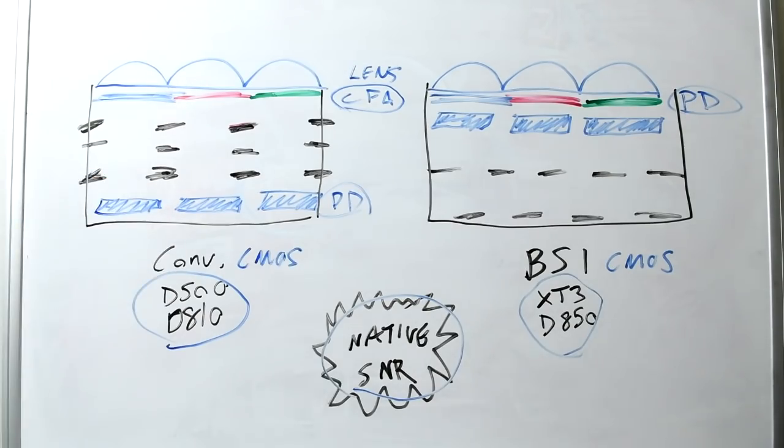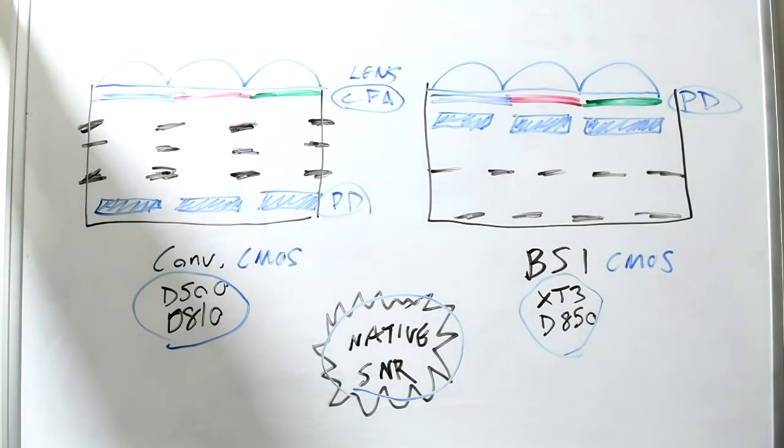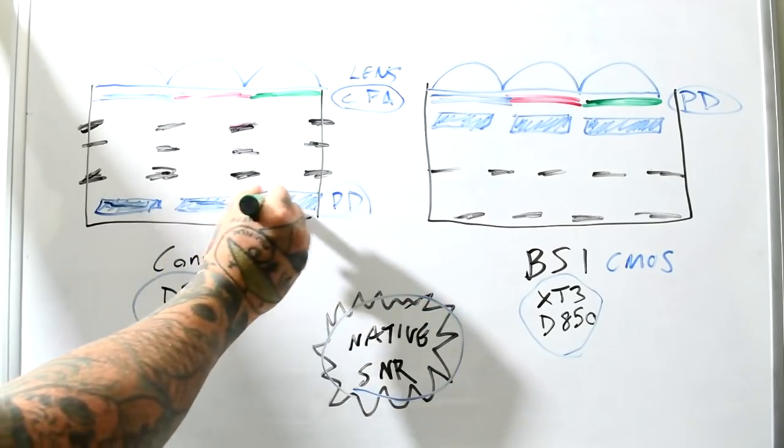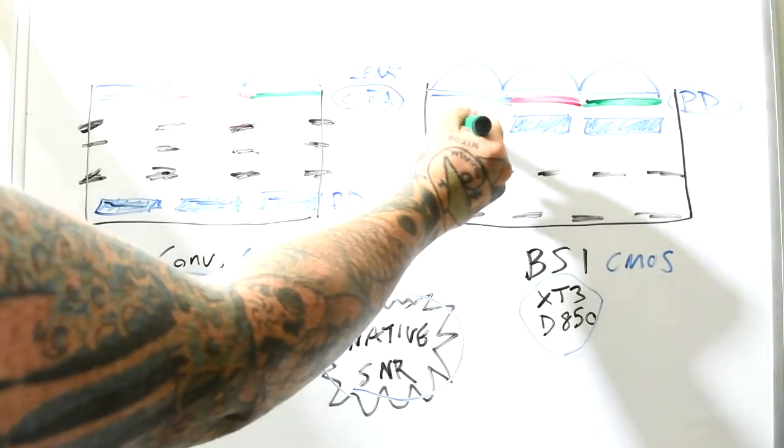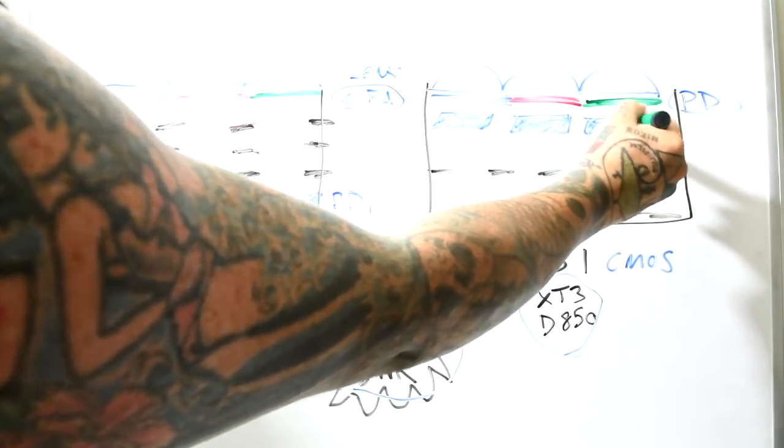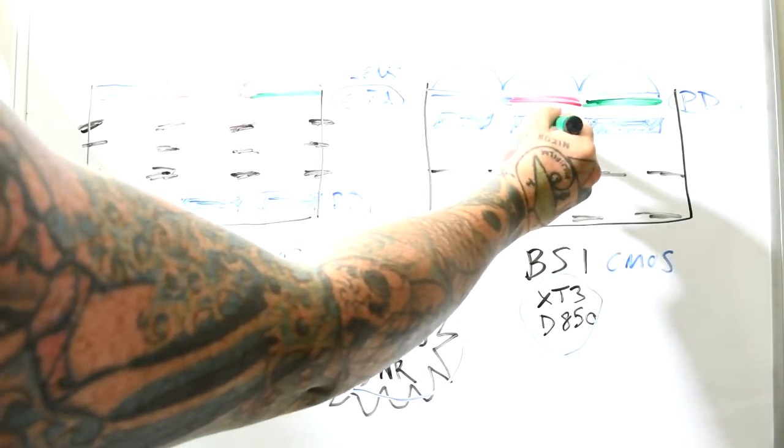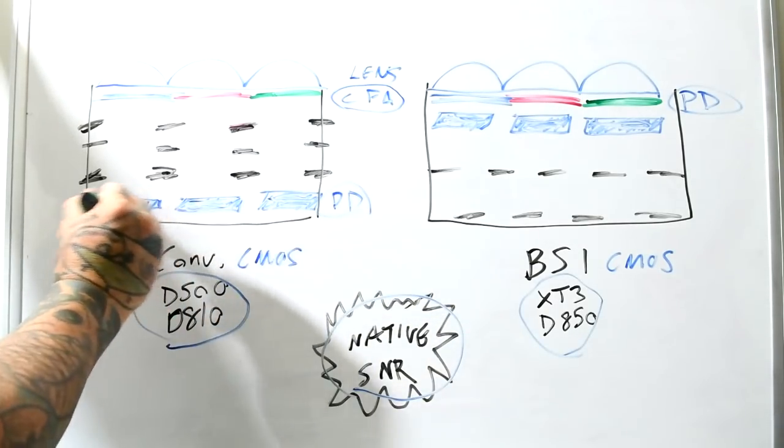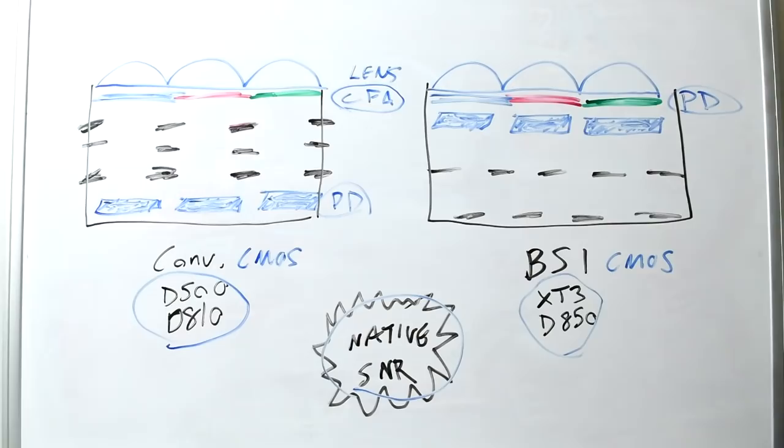That's the color filter array. And what we actually have here, if you notice, very interestingly, on a conventional CMOS, we have the PD, or photodiode substrate. It's this right here. However many millions of megapixels of them there are. You notice that on the BSI sensor, it's located right here.